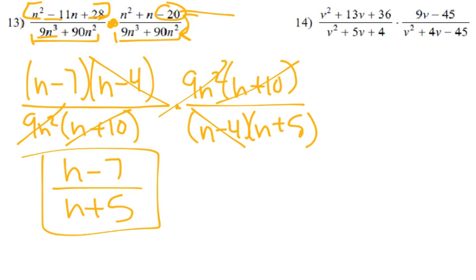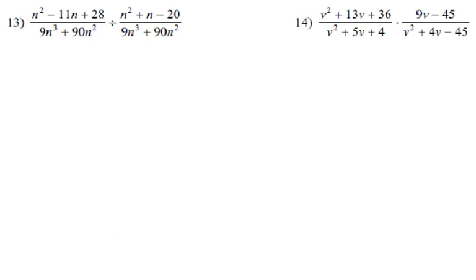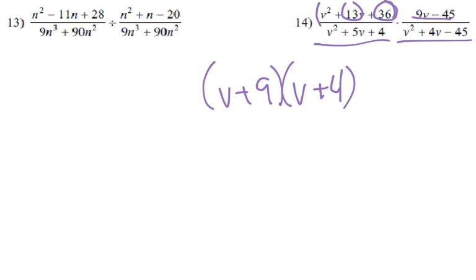So then, we take a look at 14, clear out some space. Same thing here. So we got to factor this, this, this, and this. So factors of 36 that add up to 13, would be, not 6 and 6, 9 and 4. So v plus 9 times v plus 4 would be that one. This one, we can pull out a 9. So times 9 times v minus 5, all over,